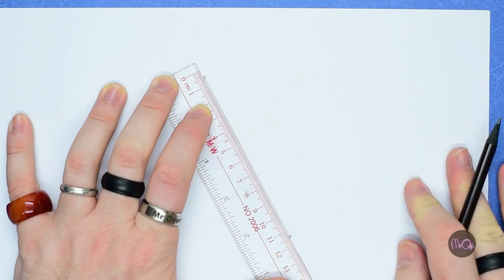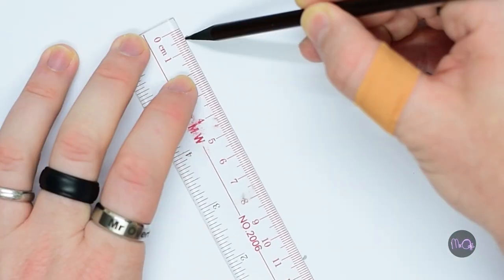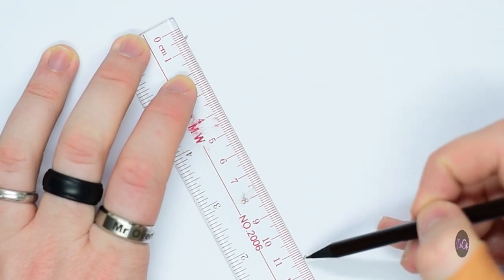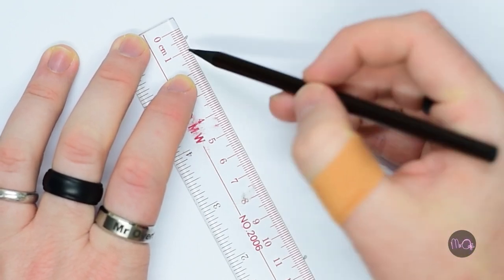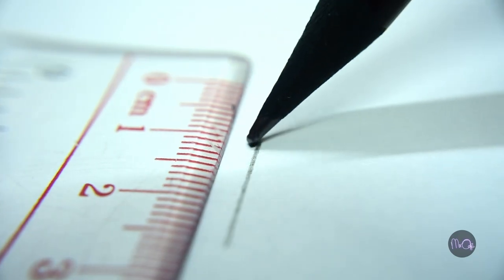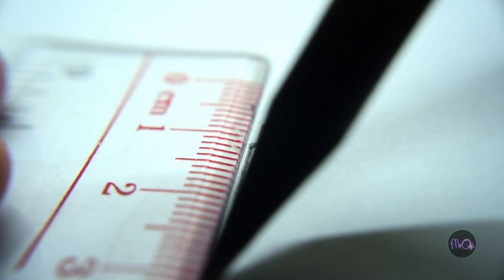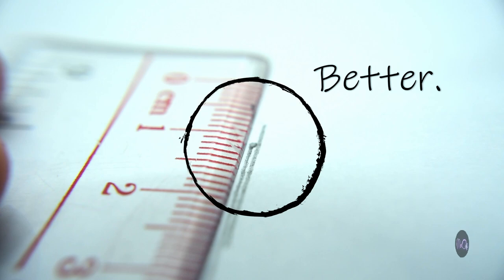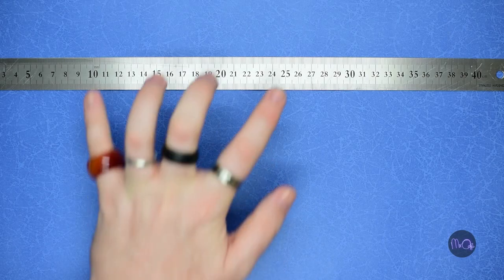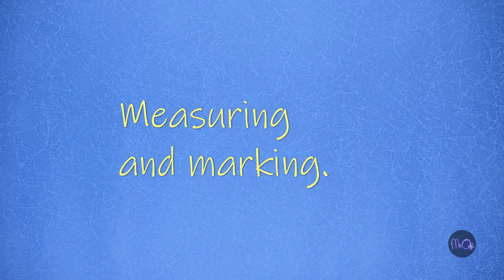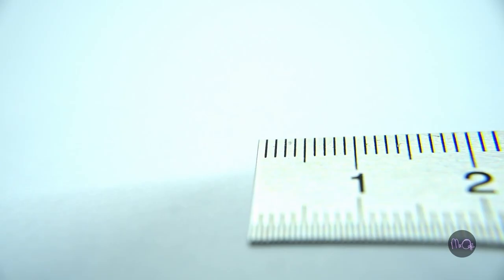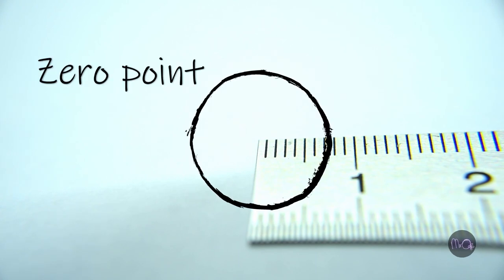To be super precise, you can move the ruler against your pencil at both ends before starting to draw. Make sure to hold it tight.